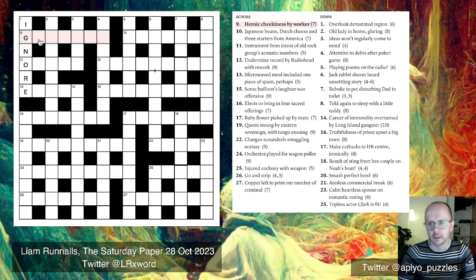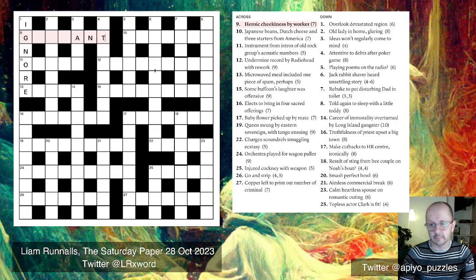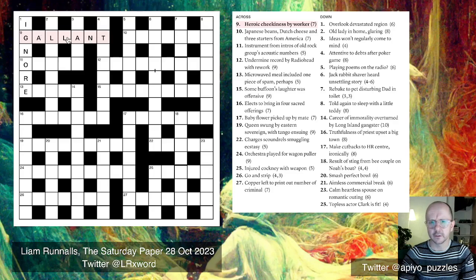That gives us a starting letter for 9-across: 'heroic cheekiness by worker.' A worker is quite often a hand or an ant — I think 'ant' is more likely at the end because the definition is probably 'heroic,' an adjective, which more likely ends in 'ant' than 'hand.' A word for heroic here is GALLANT, where 'gall' is another word for cheekiness.